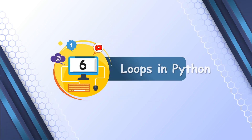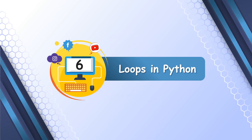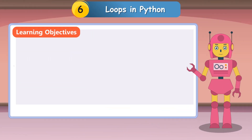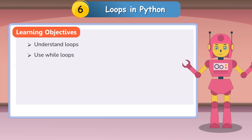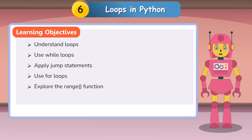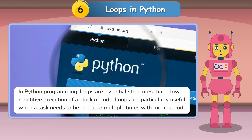Chapter 6: Loops in Python. Learning Objectives: Understand loops, use while loops, apply jump statements, use for loops, and explore the range function.